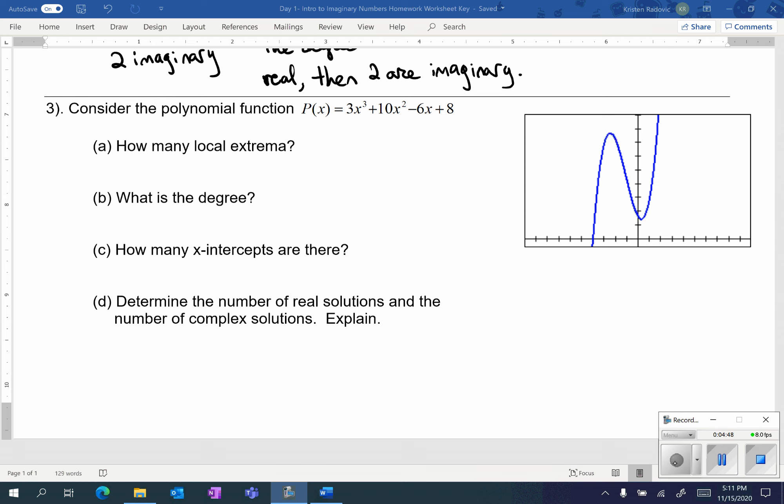Here they are giving us a polynomial function. The first part is asking for how many local extrema there are, which means how many turning points does this graph have? I see one turning point, two total turning points.